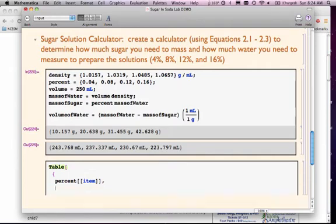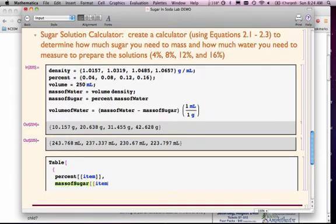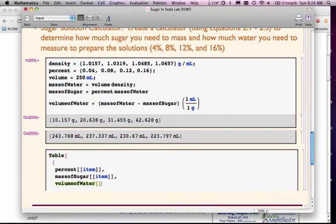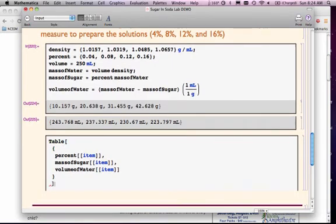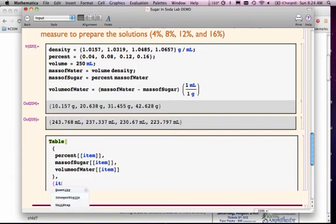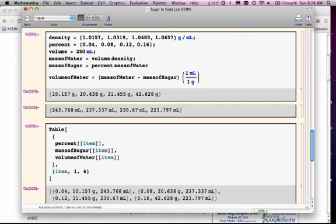So I want my items there. And then I want my mass of sugar, and I want that item. And I want my volume of water, and I want that item. That's the end of my list. I'm going to close my curly bracket, close my square bracket. Now I need my, what does item mean? Item means going from 1 to 4. There's my table.